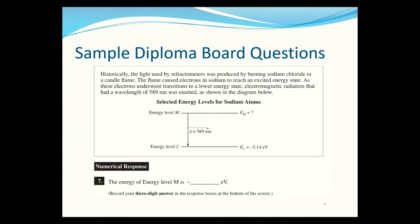This next question asks for the energy level of M, and it's a bit trickier because the negative sign comes into effect. Remember that the top energy level is zero, so energy values get closer to zero as the electron moves up. We need to find the energy level difference, so we'll use E = hc/λ.